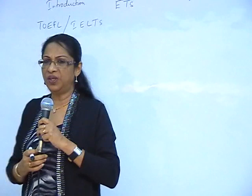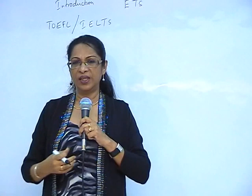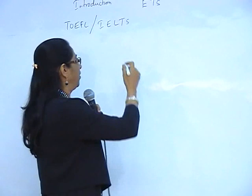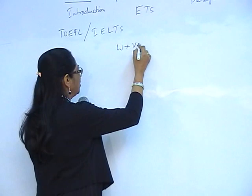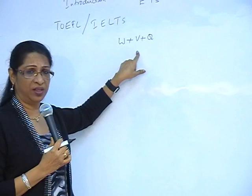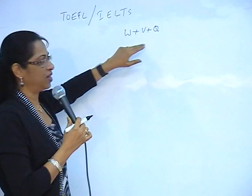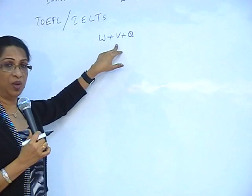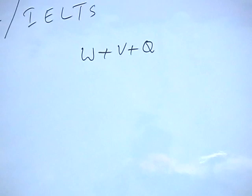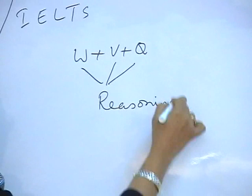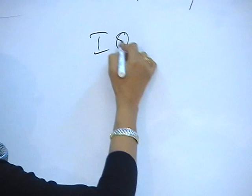Now, if the need for writing the TOEFL or IELTS is very evident — we need to provide language proficiency — then what is the purpose of writing the GRE? The GRE has a writing component, a verbal component, and a quantitative component. Though it has a writing and verbal component, it's not a language test. Even though it has a quantitative math section, it can't really be called a math test either, because these components are given certain names. The writing is called analytical writing, the verbal section is called verbal reasoning, and the quantitative is called the quantitative reasoning section. That means the GRE is a test of logic and reasoning.